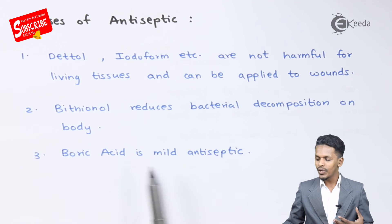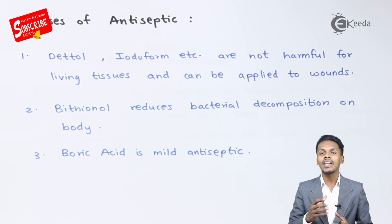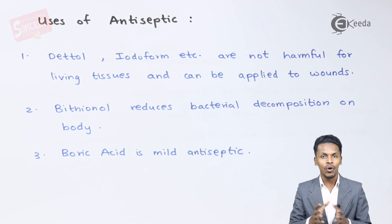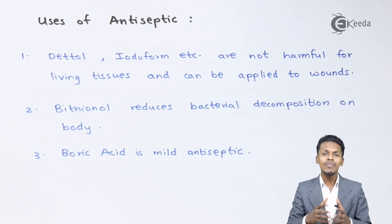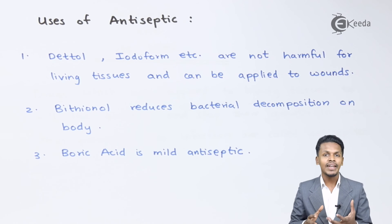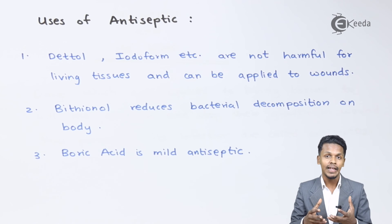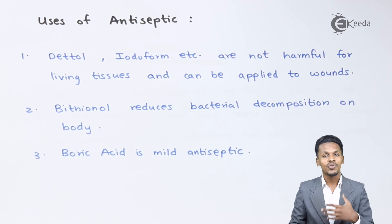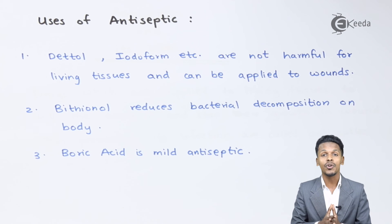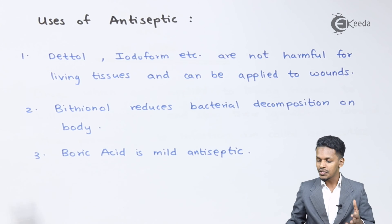Talking about boric acid — it is a mild antiseptic. Most professional swimmers use boric acid in the form of ear drops. The water in which they swim could be infected by microorganisms, and there is a chance that fungus could grow in their ears. To avoid that, they use boric acid. Boric acid can be used as ear drops and also as an eye wash.